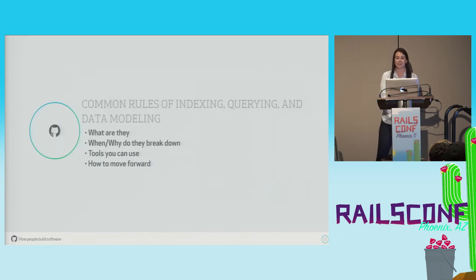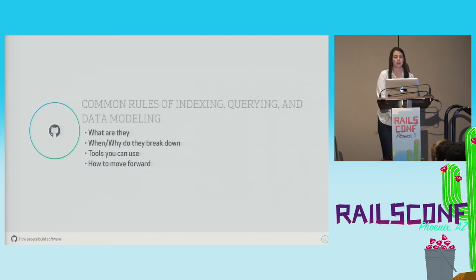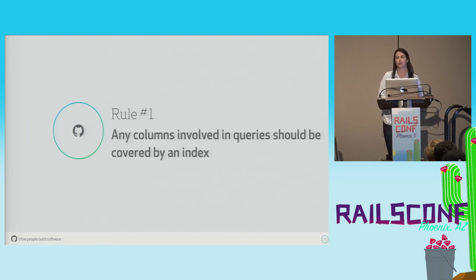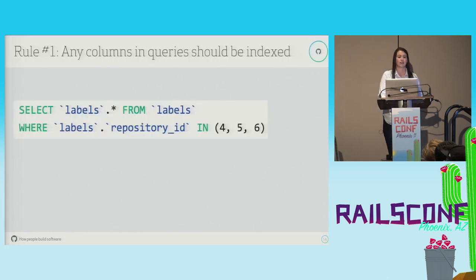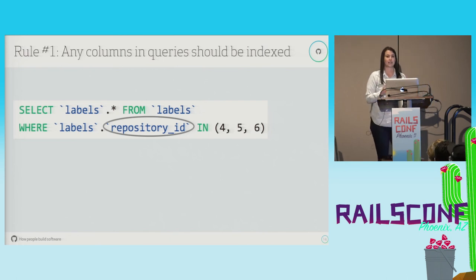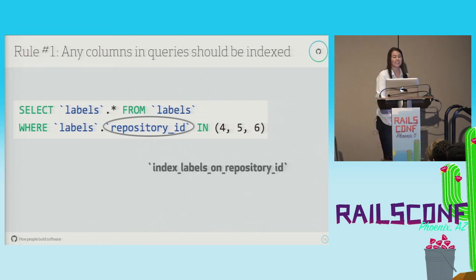Now that we have a better understanding of how indexes work, we're going to move on to some common rules of indexing, querying, and data modeling — what they are, when and why they break down, what tools you can use, and how to move forward. Our first rule is: any columns involved in queries should be covered by an index. Let's take a look at a sample query — we want all labels where the label repository ID is either four, five, or six. Your first thought might be to add an index over repository ID so we can get to the records faster, and that's a great instinct. So we go ahead and add an index over repository ID.